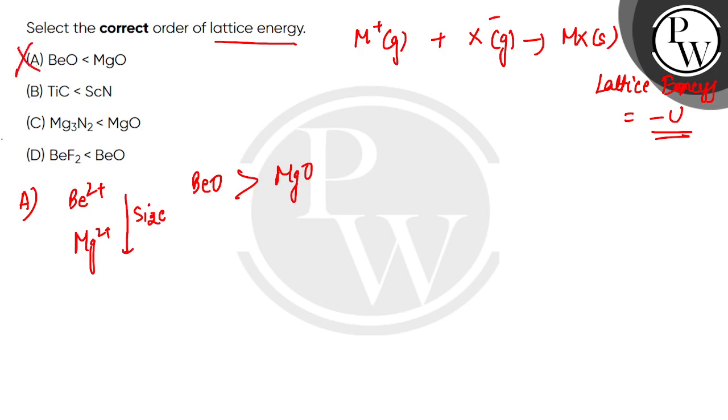Option B compares TiC (titanium carbide) and ScN (scandium nitride). Titanium carbide has Ti^4+ and C^4-. Scandium nitride has Sc^3+ and N^3-. Now let's see which lattice is stronger and has greater energy.